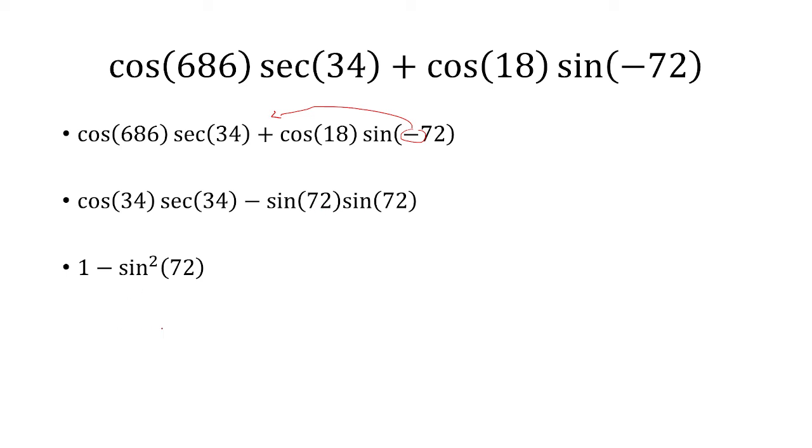We get 1 minus sine squared 72, which is equivalent to cosine squared 72. Since sine squared 72 plus cosine squared 72 is equal to 1, cosine squared 72 will give us 1 minus sine squared 72. So our final answer is cosine squared 72.